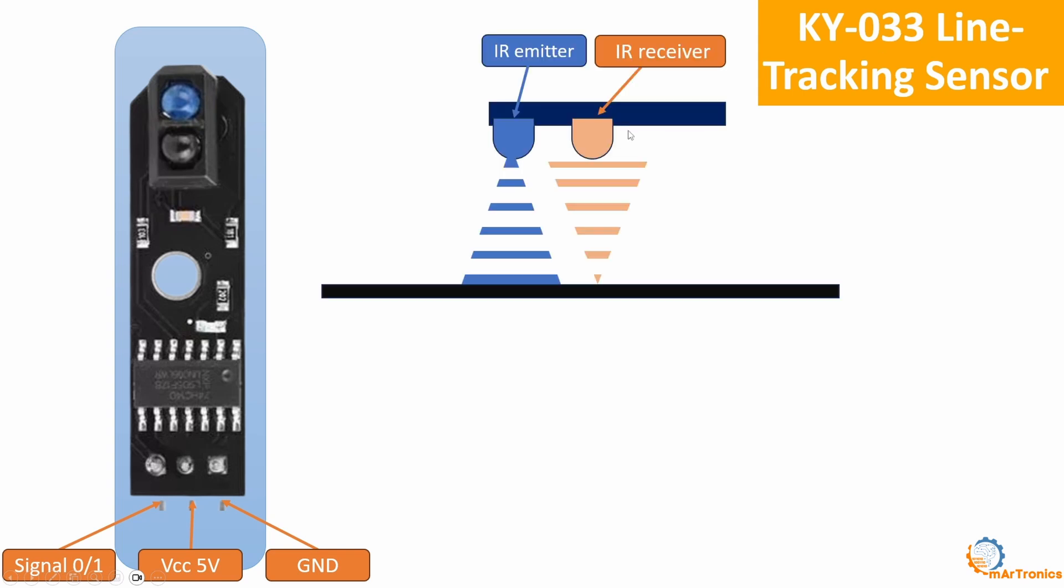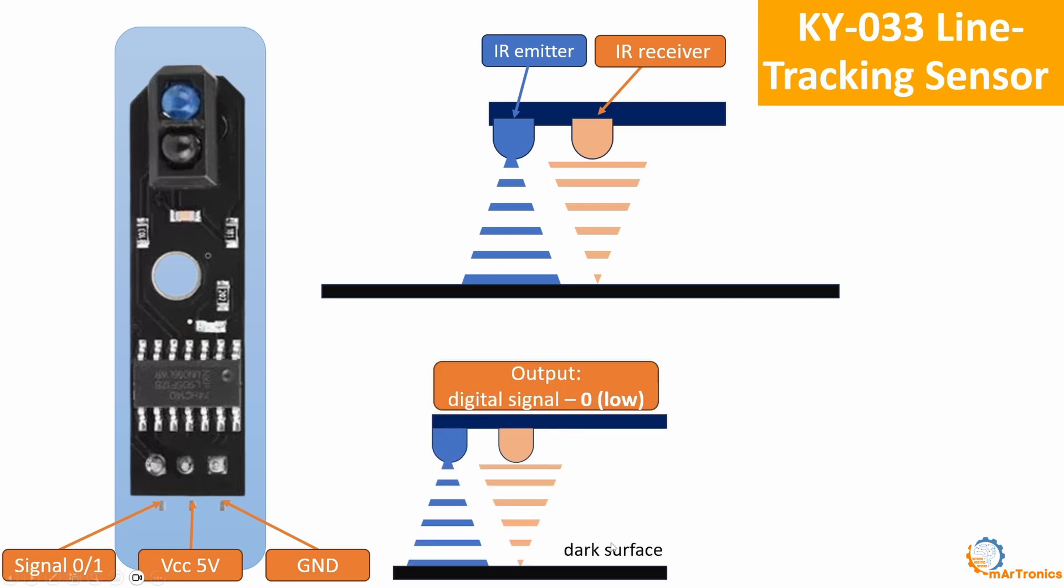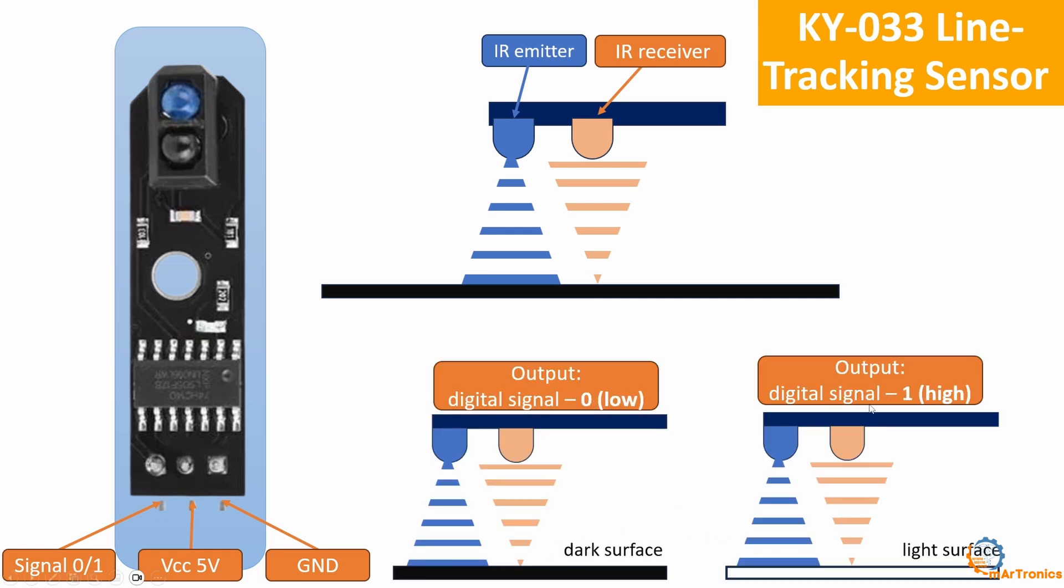Now I will explain how the KY-033 sensor works. It contains an infrared transmitter and an infrared receiver. Here we have the ground that absorbs these rays. By measuring the reflected wave, it determines whether the surface is light or dark. As for the output, this sensor provides a zero or one signal depending on the surface. If the surface is dark, a digital signal of zero is given, while if the surface is light, a digital signal of one is given. Based on this value, it can determine whether there is a surface change or not.